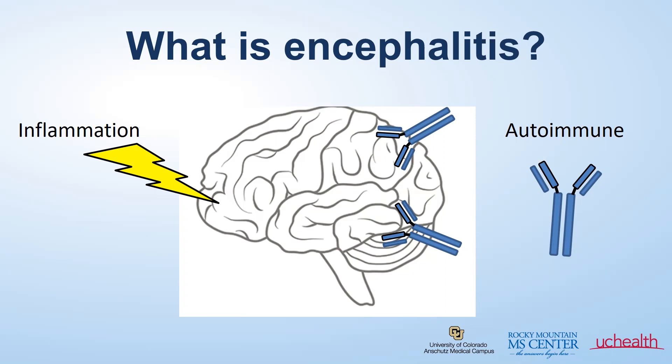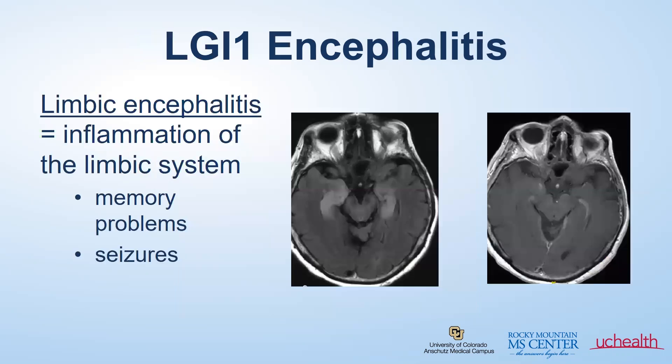In the setting of autoimmune disease, the immune system causes an inflammatory response and development of an autoantibody that can go on and attack your brain. With that in mind, let's move on to limbic encephalitis.